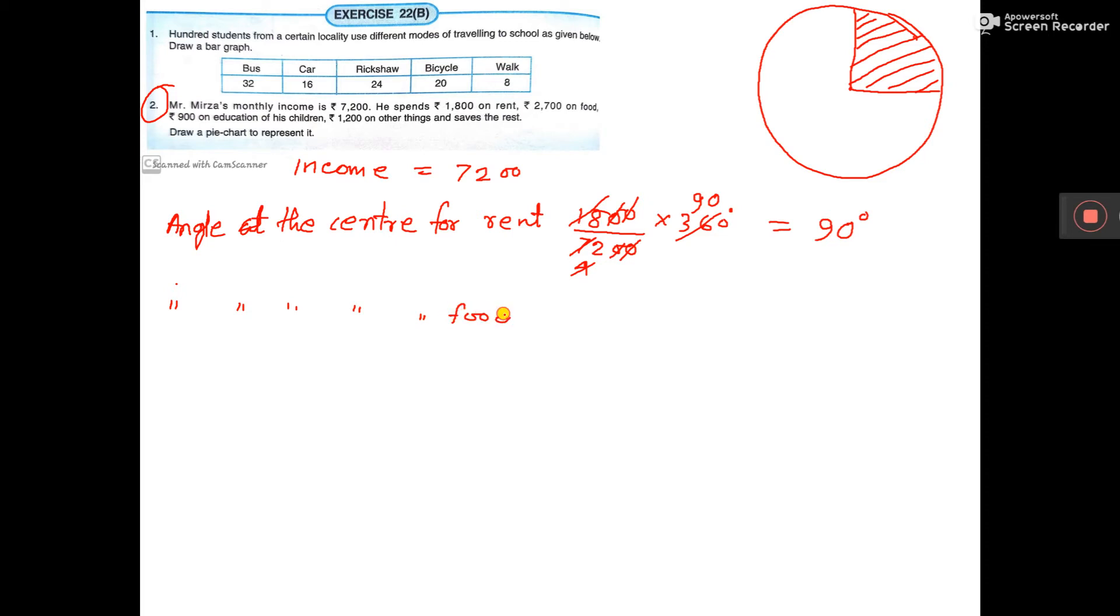Food will be what? Food is 2700 by 7200 into 360 degrees.